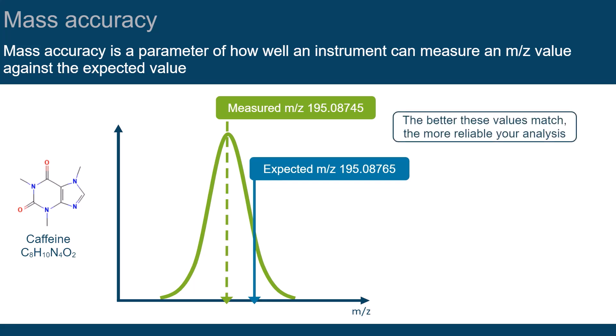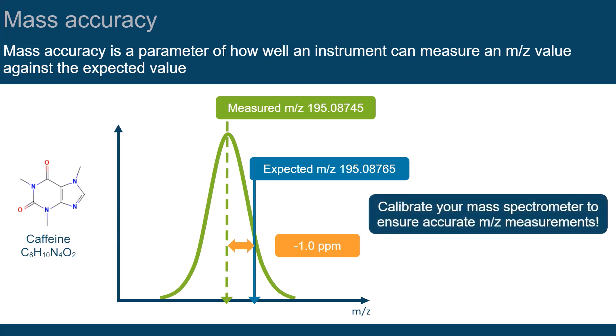The better these values match, the more reliable is the result of your analysis. The value is usually calculated and reported in ppm. Performing an accurate mass calibration of the mass spectrometer ensures that you make accurate M over Z ratio measurements.